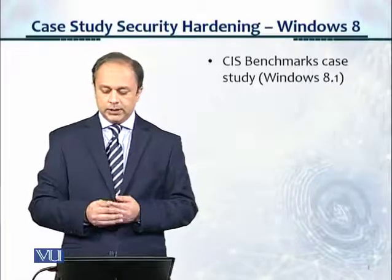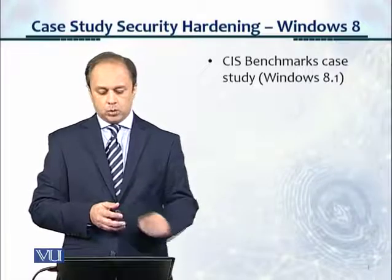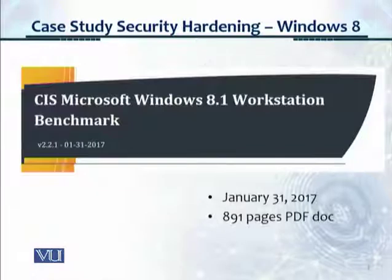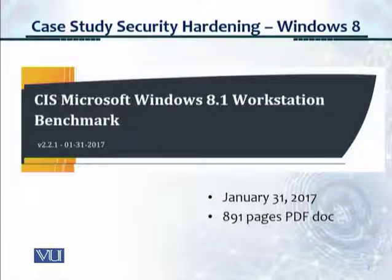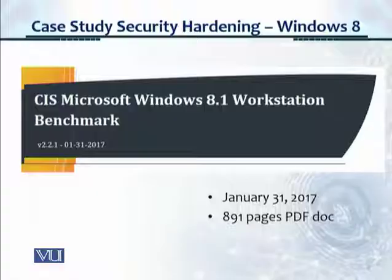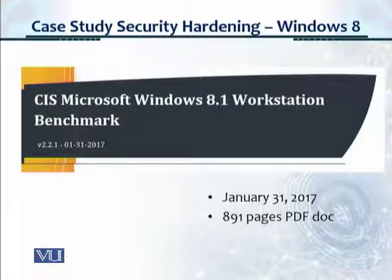This is a CIS benchmark for Windows 8.1. This is what the PDF document front page looks like — January 31st, 2017, 891 pages. Phenomenal length. The Windows workstation OS security controls are massive. This is a 900-page document, probably the largest one I've ever seen.